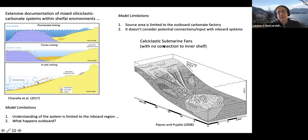We have these calciclastic submarine fans. This model was developed by Pyros and Puhante in 2008. In here what we have is a carbonate buildup or carbonate factory in the outboard area or outer shelf. And then we have the development of these canyons or channels that are fed by these carbonates and that in some areas look like siliciclastic systems with channels and fans and so on. But the limitation with this other model is that the source area is limited to the carbonate factory. It doesn't consider potential connections between the inboard systems that could be siliciclastic and these carbonate platforms outboard.